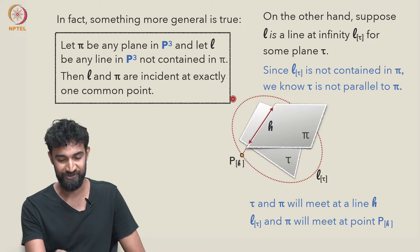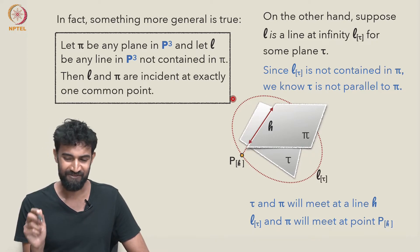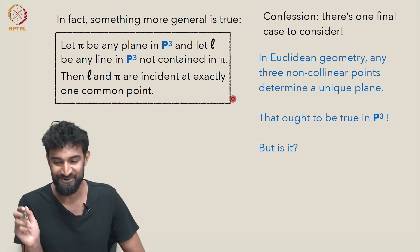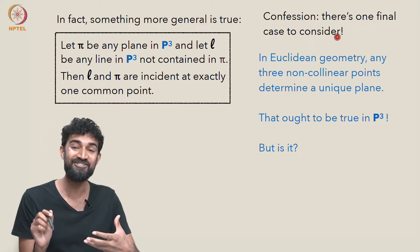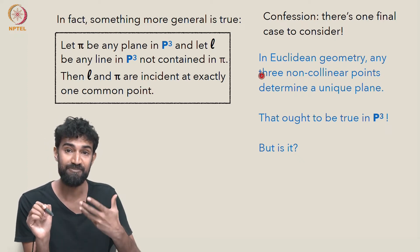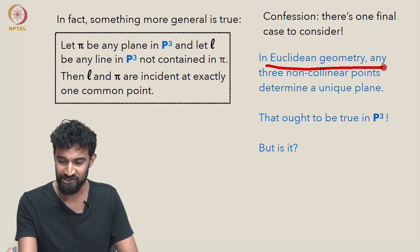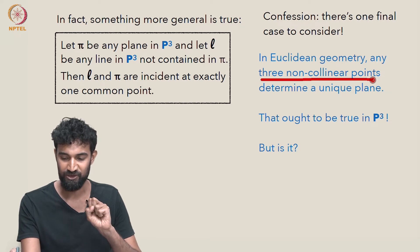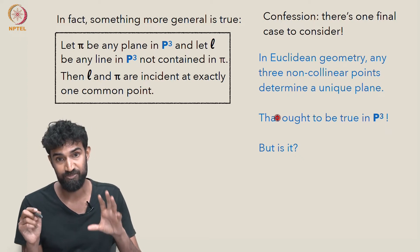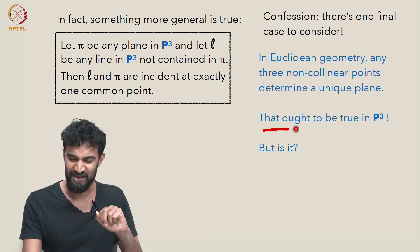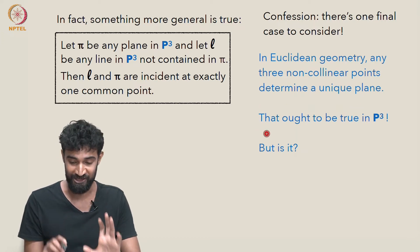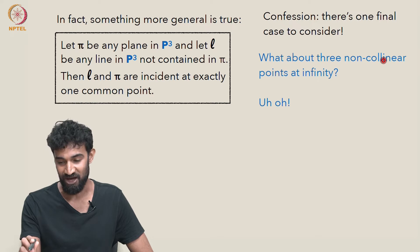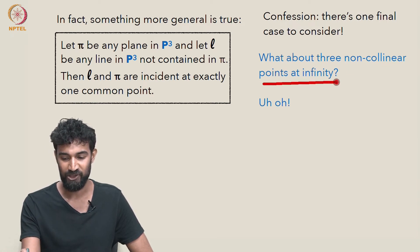So we've considered all cases: L can be a line at infinity, or it could be an ordinary line. But there's a confession — there is a final case to consider. I've been a bit lax in defining the extended plane P3. In Euclidean geometry, any three non-colinear points in R3 will determine a unique plane in R3. We really want that property to hold in P3, but the way we've set things up, it doesn't — because we could take three non-colinear points at infinity, and then we're going to have a problem.